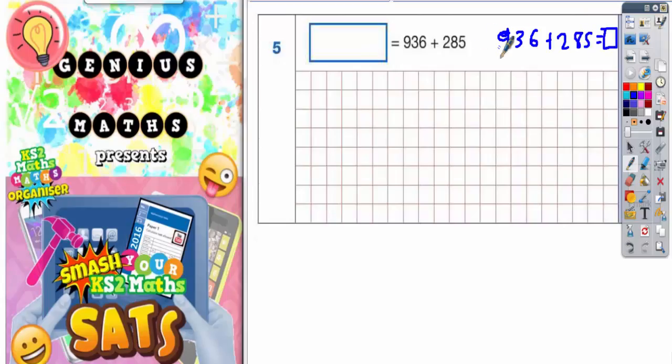So all we've got to do is figure out what 936 add 285 is. Easiest way to do this one, you're not expected to do this one in your head, is probably to do a column method. It's the safest and easiest way to make sure that you get the easy marks available on this question.